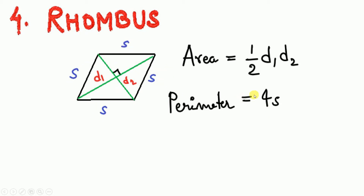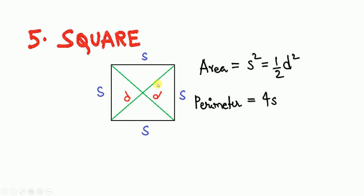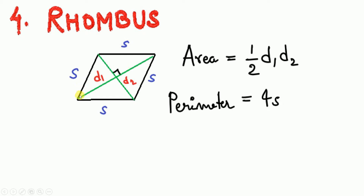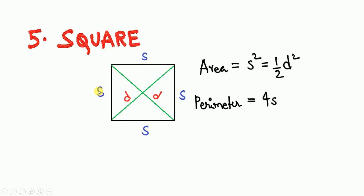The square is a special case of a rhombus where all angles are 90 degrees. This makes the diagonals equal but still perpendicular to each other. All four sides are s, so perimeter = 4s. Area = s², which is also equal to ½ × d².